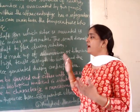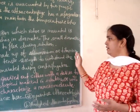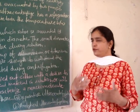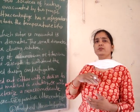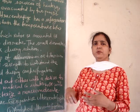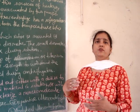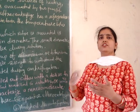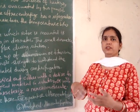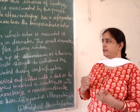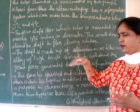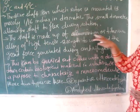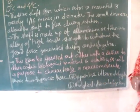The shaft is made up of aluminium or titanium alloy of high tensile strength to withstand the great forces generated during centrifugation. At such high speed, a great centrifugal force is generated, and to withstand this force the alloy used must be very strong — made up of titanium or aluminium.